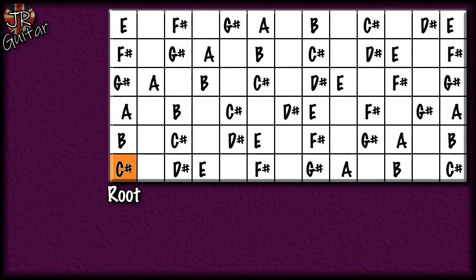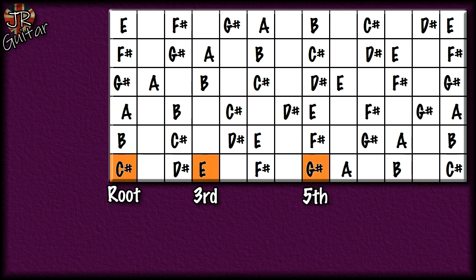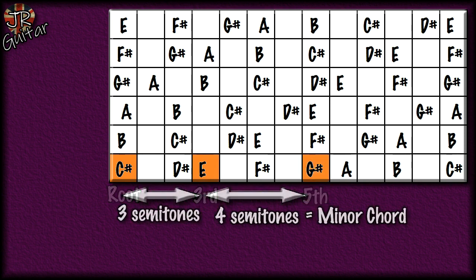Into the home stretch — we start the root-third-fifth from C#. C# is the root, then the third is E, and the fifth is G#. Measuring that up, we have three semitones between the root and the third, and four between the third and the fifth — that gives us a minor chord. Starting on C#, it's a C# minor chord.